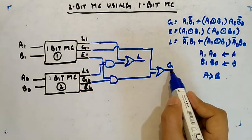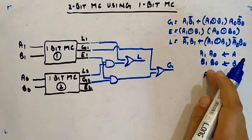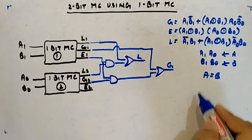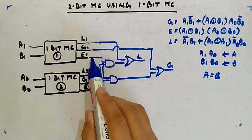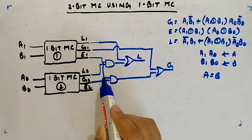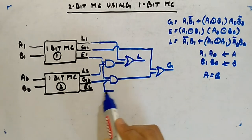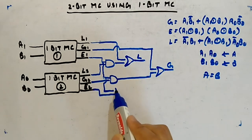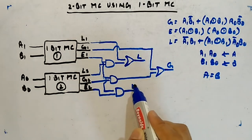For E, how do you get A equal to B? When the MSBs are equal and the LSBs are equal — meaning E1 is one and E2 is one. So we take E1 and E2, AND them together, and that gives us the overall E output.